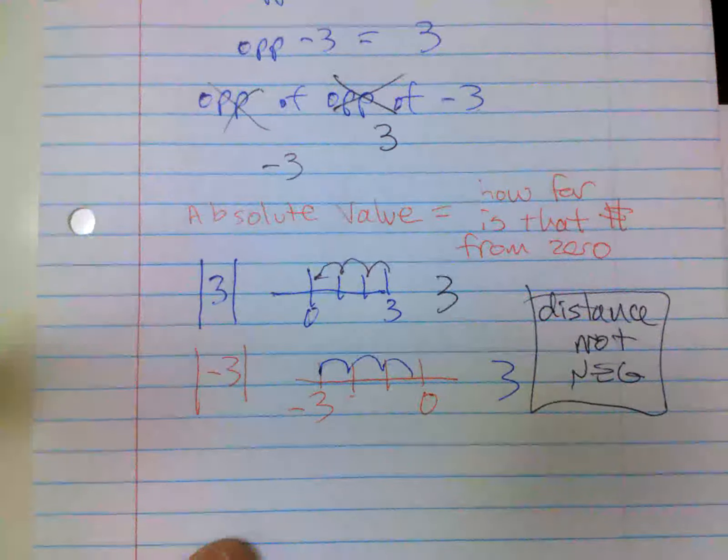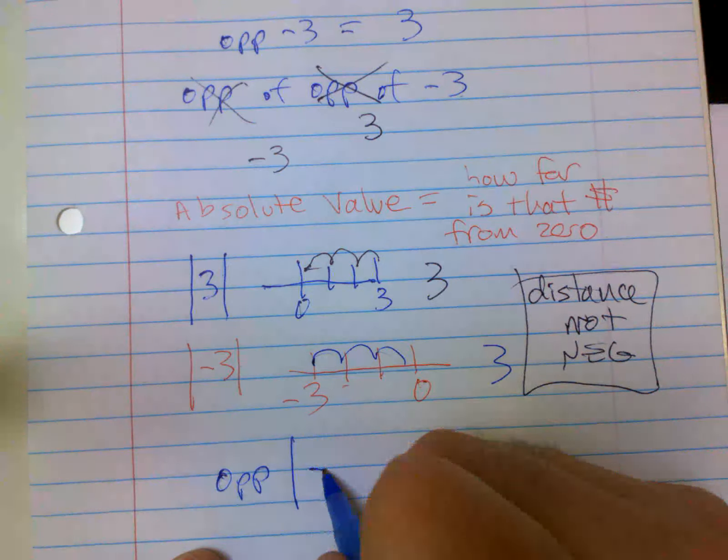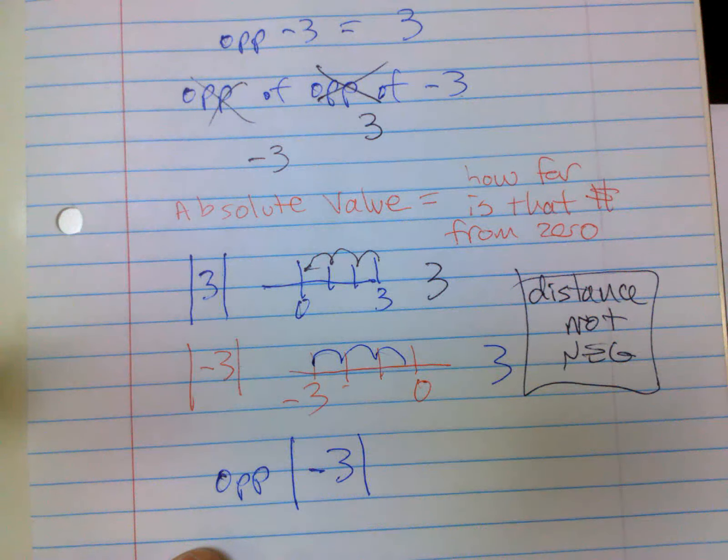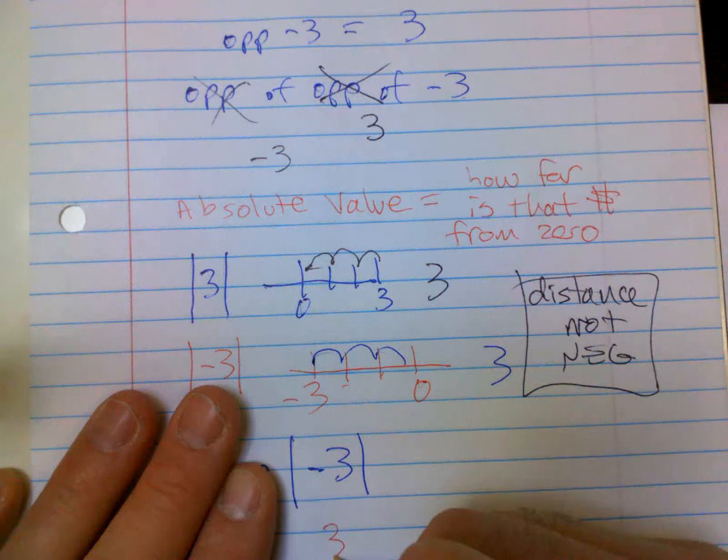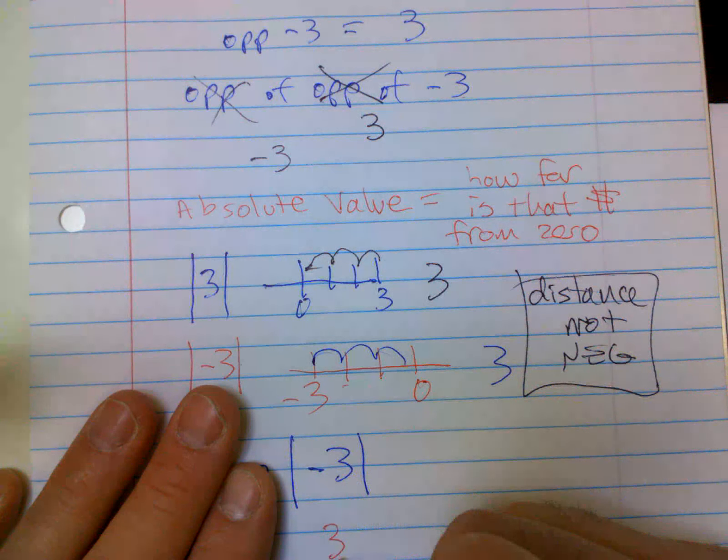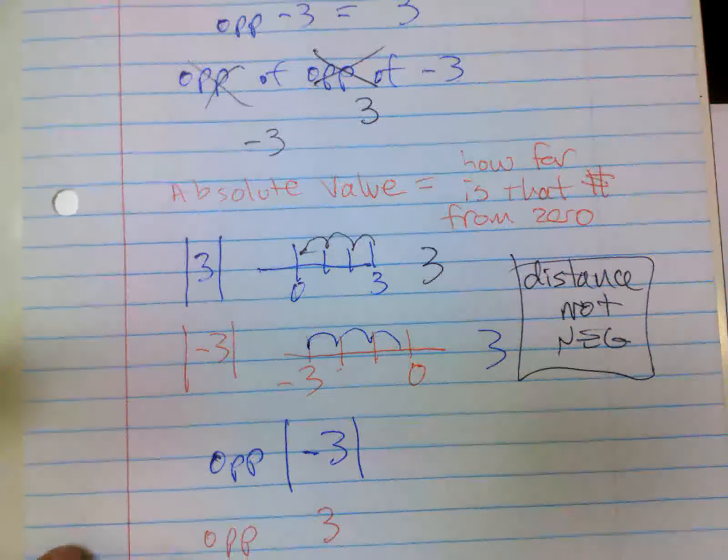Now, the way they try to get tricky with it is if they say the opposite of the absolute value of negative three. So first you do the absolute value, the absolute value of negative three is three. How far is negative three from zero? It's three spaces. But now I want the opposite of that. Well, now it's negative three.